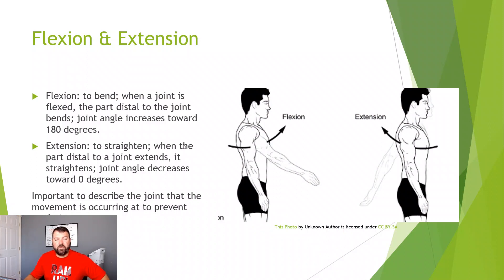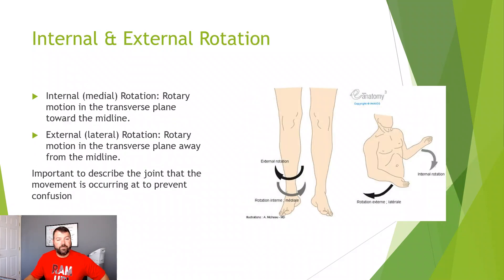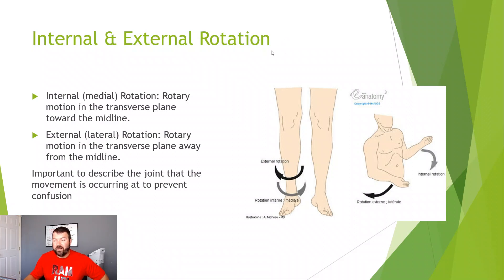Flexion and extension — as I said, here is shoulder flexion and this is shoulder extension. Here are some of the internal and external rotations — I showed you shoulder internal and external rotation. At the hip, all the arrows are down at the lower leg, but the motion is actually happening up here at the hip. So hip external and internal rotation is where all that motion occurs.